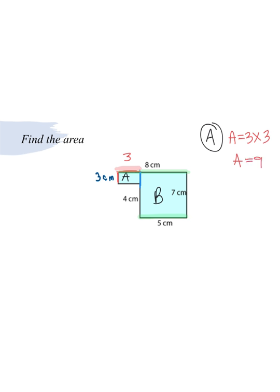And then for B, that one is labeled nicely for us. We're going to be doing 7 times 5 to find the area of B. So B, our area is 7 times 5, which that gives me 35.